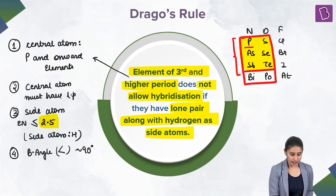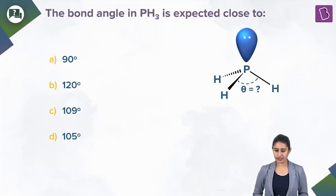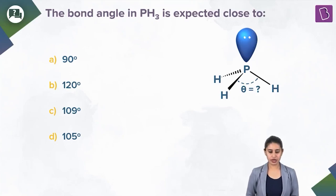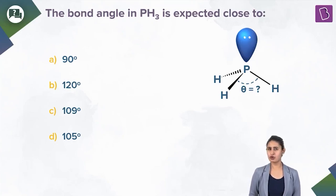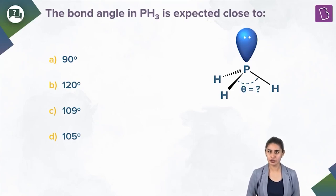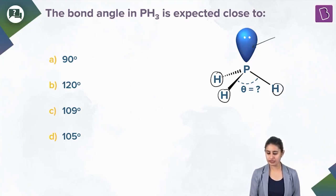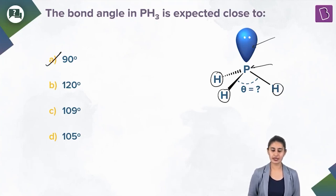Now a practice question: what is the bond angle in PH3? We just discussed PH3. You know the rule — it's a Drago compound. Check the lone pair, check the side atoms, check that it's phosphorus. The bond angle will be close to 90°. So the correct answer is option A.